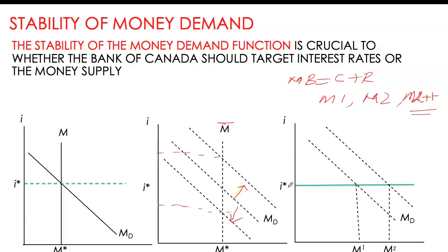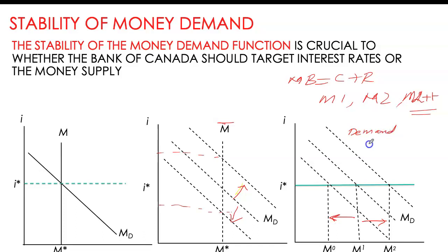With an interest rate target, even if money demand increases, interest rates remain stable. The central bank accommodates the increase in money demand by increasing money supply. Likewise, if money demand decreases, the central bank reduces the quantity of money to maintain the interest rate target. With interest rate targeting, money supply has essentially become demand-determined — whatever happens to money demand, the central bank adjusts money supply to ensure the interest rate remains at its desired target level.